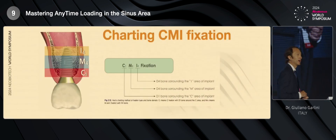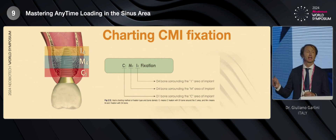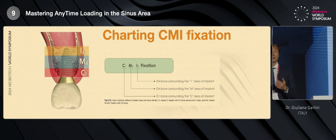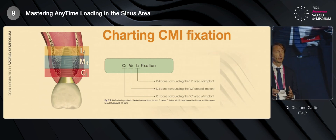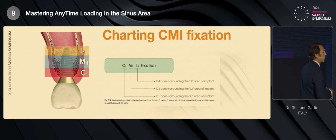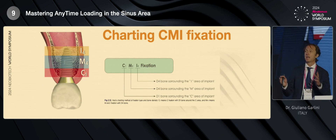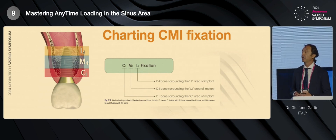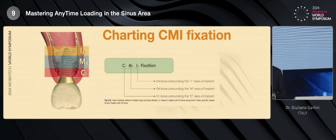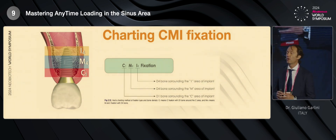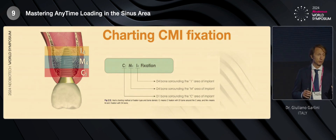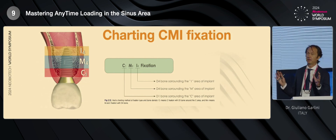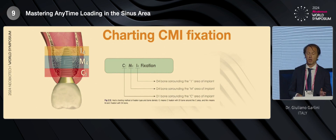I know that now you are probably all familiar with the CMI concept, and I suggest you to chart every time which kind of fixation you reach in every clinical situation. Because not always the surgeon and the prosthodontist are the same doctor. In our case, me and Marco, we are a surgeon and a prosthodontist, but sometimes we have different figures. So the prosthodontist must know which kind of fixation the oral surgeon has reached. Please remember, chart every time which kind of fixation you have reached.